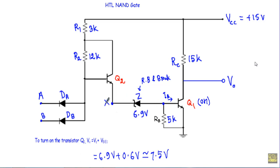I denote this terminal as X, so the voltage between terminal X and the ground terminal is Vx. To turn on transistor Q1, the Zener diode must be in reverse bias and in the breakdown region. Therefore, Vx will be the sum of the Zener voltage (6.9V) and the base-emitter voltage of transistor Q1 (approximately 0.6V). Therefore, to turn on transistor Q1, we need a voltage of approximately 7.5V between this terminal and this terminal.